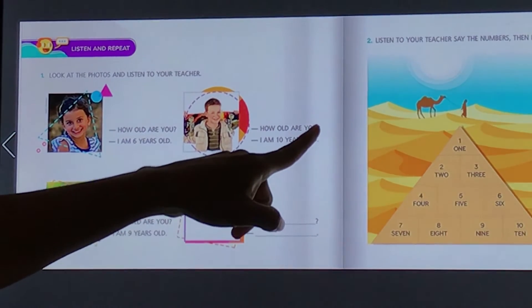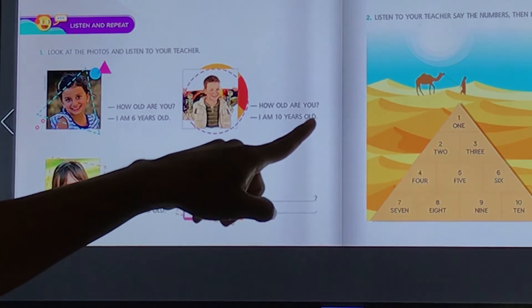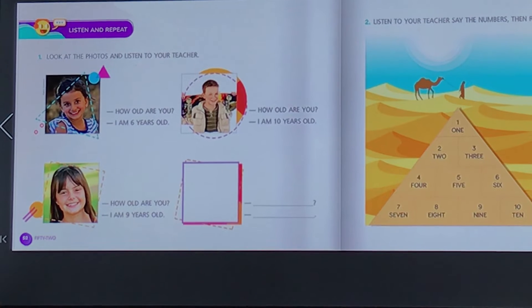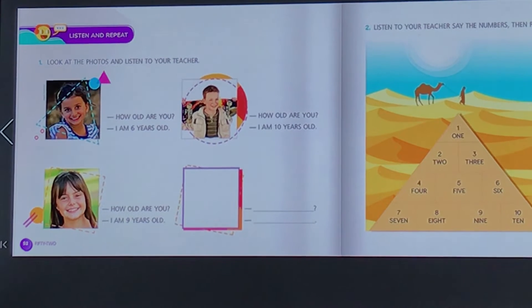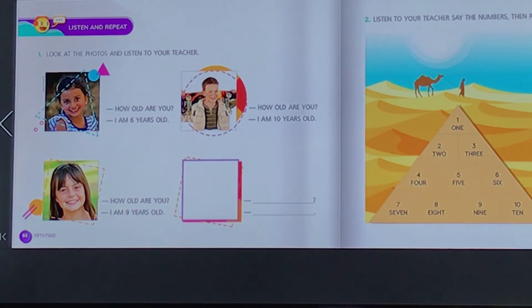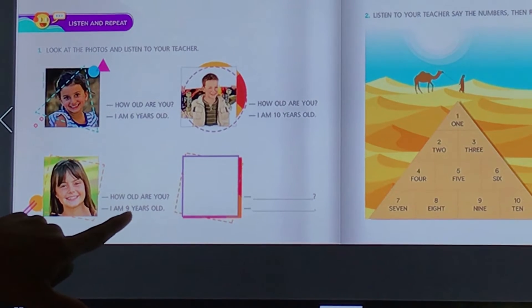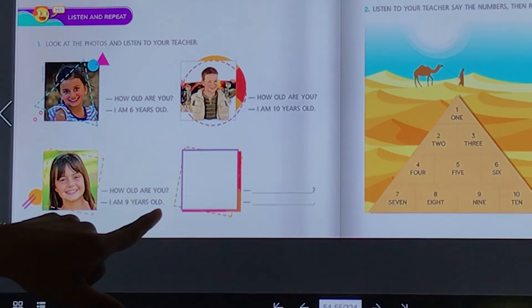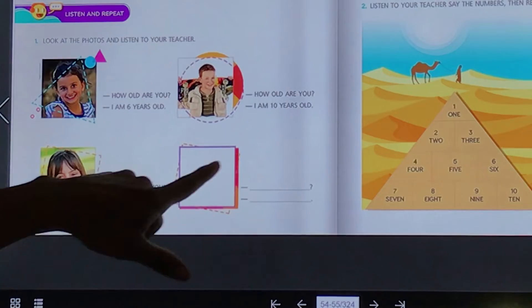Agora ele. How old are you? Ele vai responder, I am 10 years old. Eu estou 10 anos mais velho. É assim que a gente fala a idade em inglês. A gente tem que dizer eu estou 2 anos mais velho, ou eu estou 10 anos velho. Em português a gente fala diferente, eu tenho 10 anos. Em inglês a gente não fala eu tenho, a gente fala eu estou 10 anos de idade mais velho.